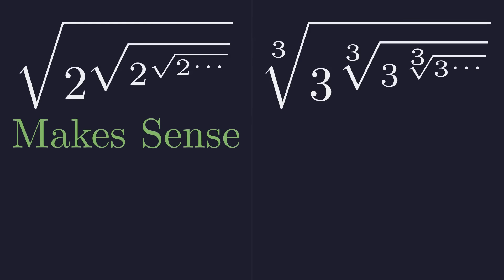This one converges beautifully to a clean integer value, while this one, despite its similar structure, supposedly doesn't. What is the hidden mathematical reason for this difference? Let's investigate.